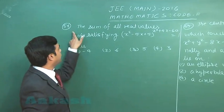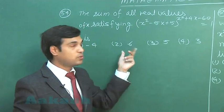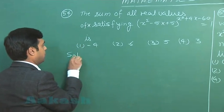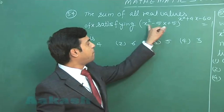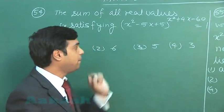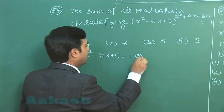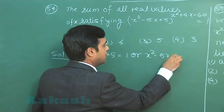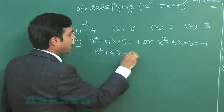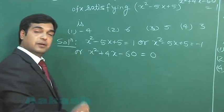Let us take the next one, that is 54th. The sum of all real values of x satisfying this equation. So we have to find the values of x first and then the sum of all the values. Now, x squared minus 5x plus 5 raised to the power x squared plus 4x minus 60 equals 1, meaning that x squared minus 5x plus 5 can be 1 or minus 1, and we have another possibility that x squared plus 4x minus 60 is 0.